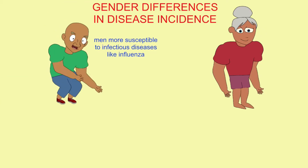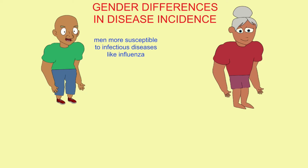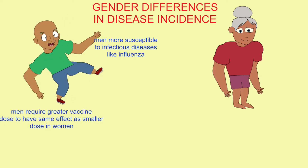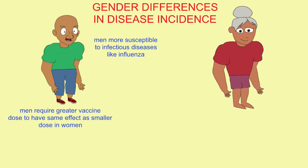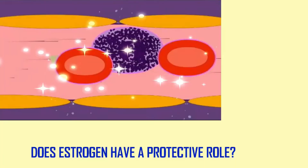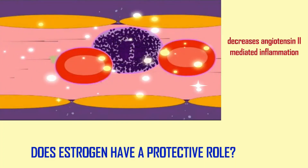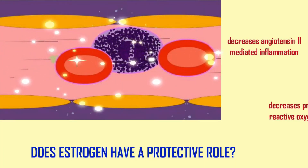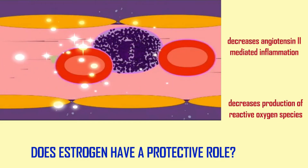Many have noted the gender differences in disease incidence and the physiology of the immune system. Men are more susceptible to infectious diseases such as influenza. When giving vaccines, it requires a greater dose for a man to have the same immunity that a woman on average has with a smaller dose. Most of the deaths from coronavirus were male, and men were more likely to be negatively affected by coronavirus.